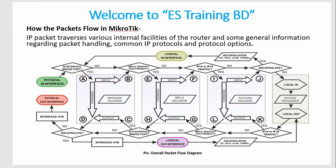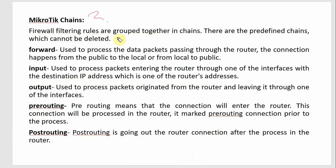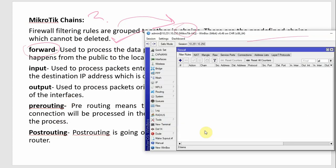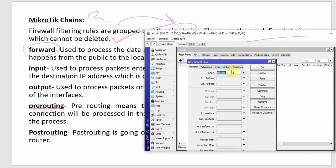The first component is Chain. Firewall filter rules are grouped together in a chain. There are predefined chains which cannot be deleted. In MikroTik, when we go to Firewall Filter and click the plus button, we can select the Forward chain.